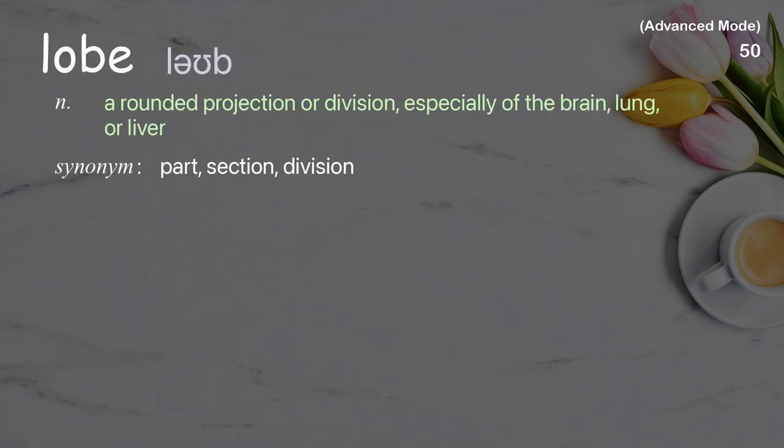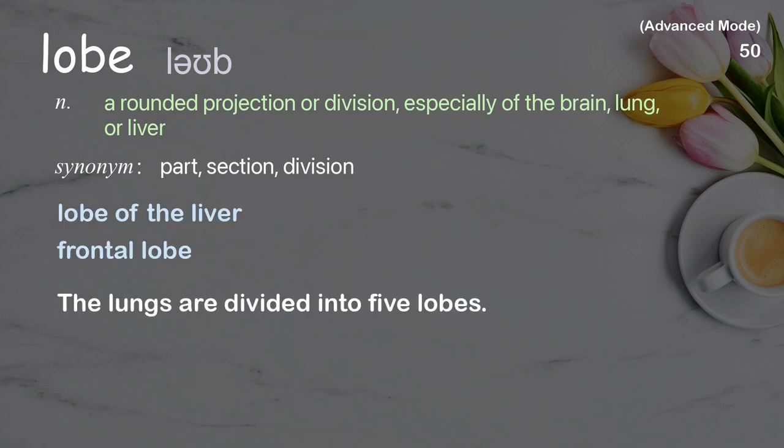Lobe: a rounded projection or division, especially of the brain, lung, or liver. Examples: lobe of the liver, frontal lobe. The lungs are divided into five lobes.